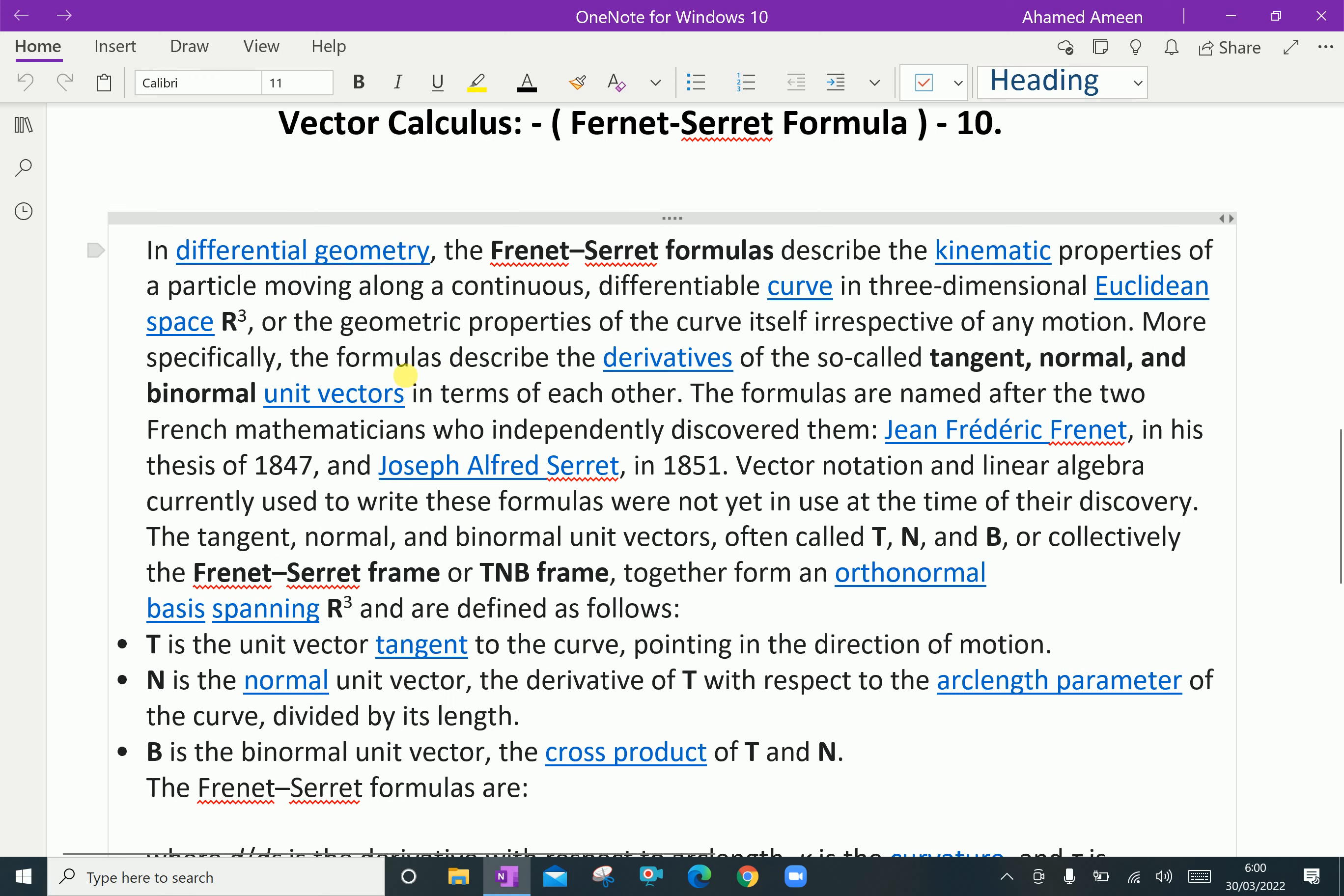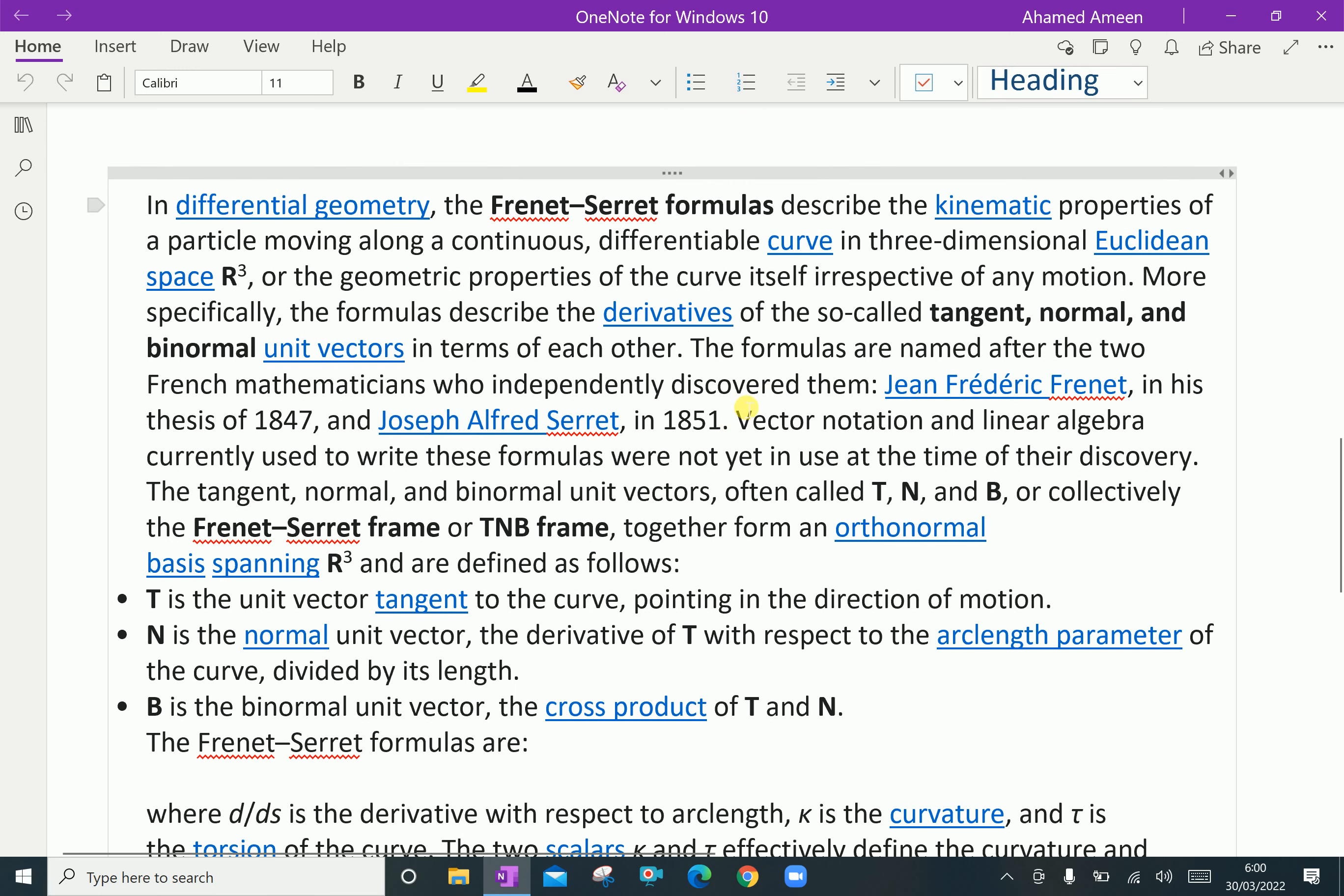More specifically, the formula describes the derivatives of the so-called tangent, normal and binormal unit vectors in terms of each other. The formulas are named after the two French mathematicians who independently discovered them, Jean-Frédéric Frenet and Joseph Alfred Serret.